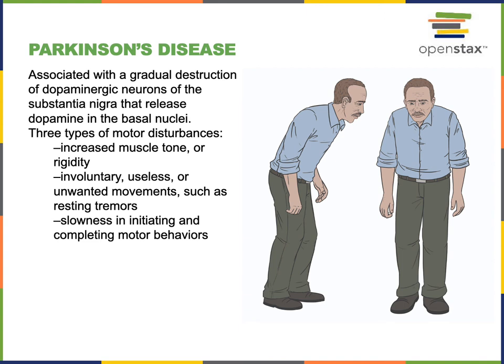Studying the brains of patients who have died from Parkinson's disease, we have learned that there is a characteristic pathology known as Lewy bodies, which are abnormal protein clumps found in the dopaminergic neurons of the substantia nigra. As Lewy bodies accumulate, the dopaminergic neurons die, and this loss of dopamine input to the striatum decreases the activity of the direct pathway and increases the activity of the indirect pathway. This decreases the likelihood that a motor command will be initiated, making it more difficult to develop the motivation to send out a motor command.